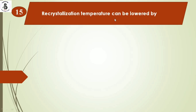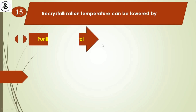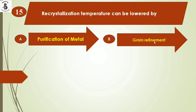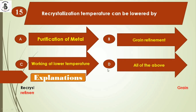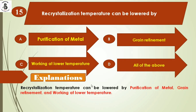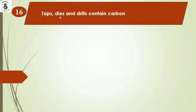The next question: recrystallization temperature can be lowered by option A) purification of metal, option B) grain refinement, option C) working at lower temperature, option D) all of the above. Recrystallization temperature can be lowered by purification of metal, grain refinement, and working at a lower temperature. The right answer is option D, all of the above.